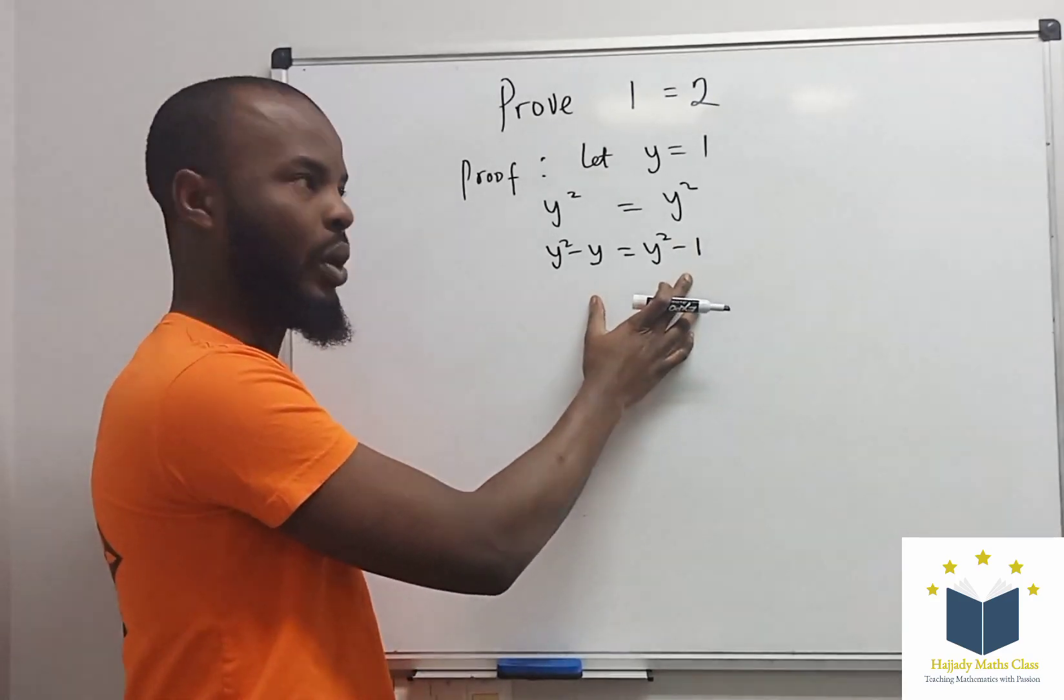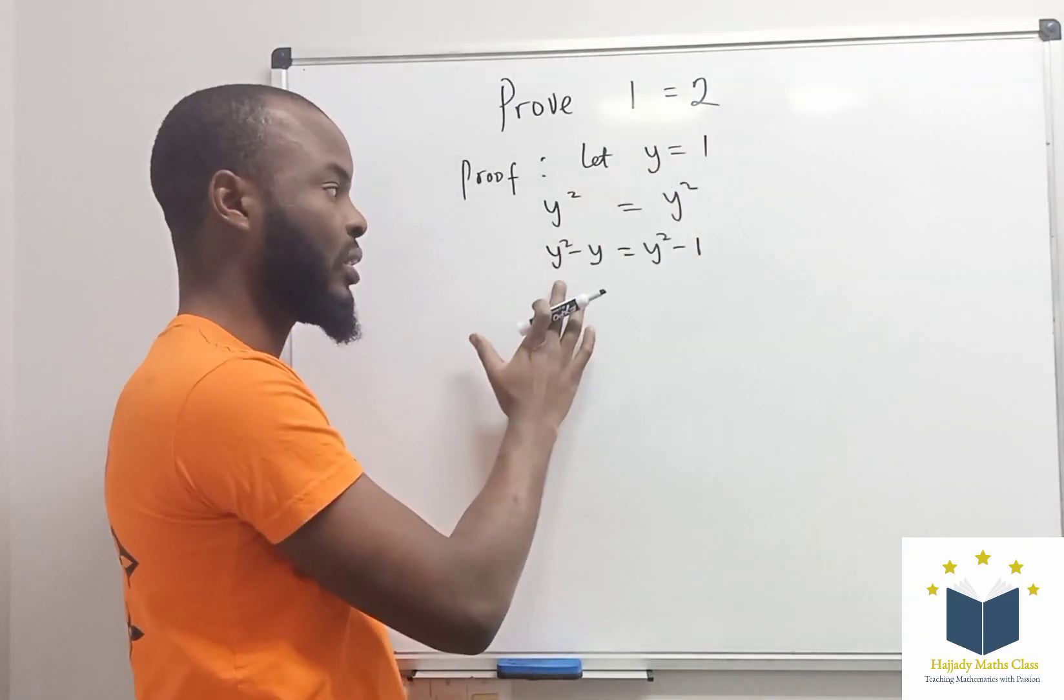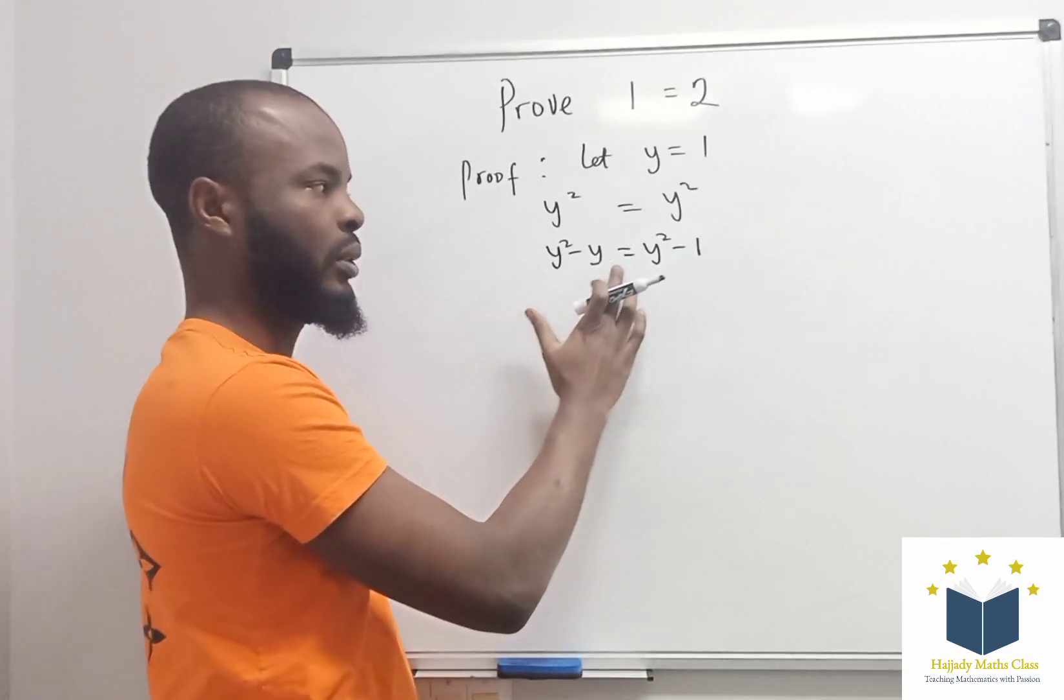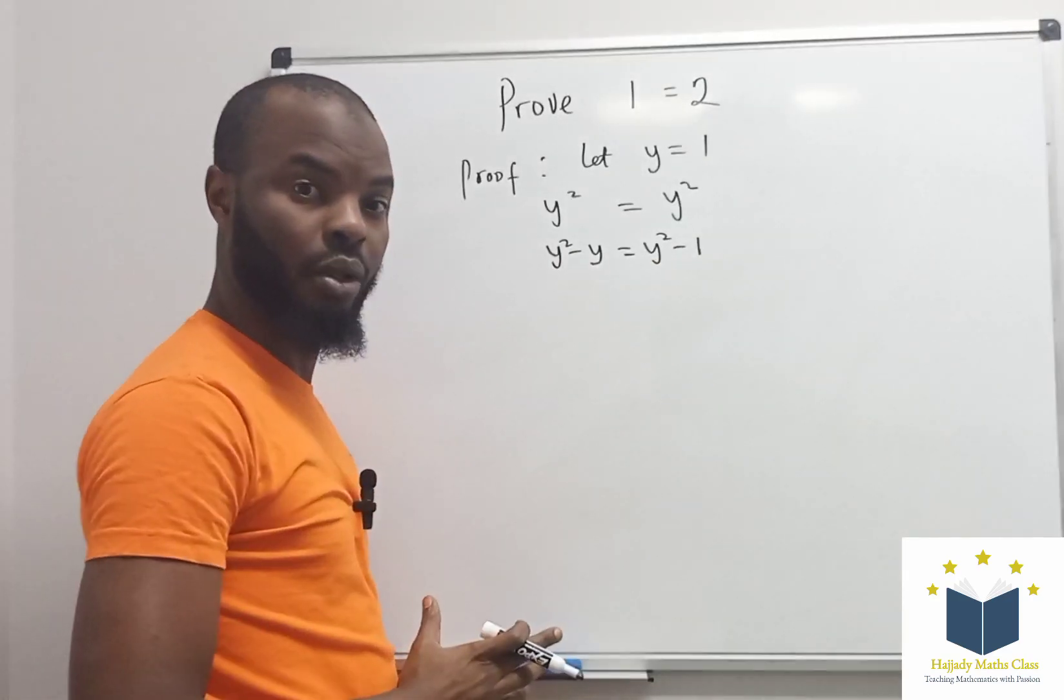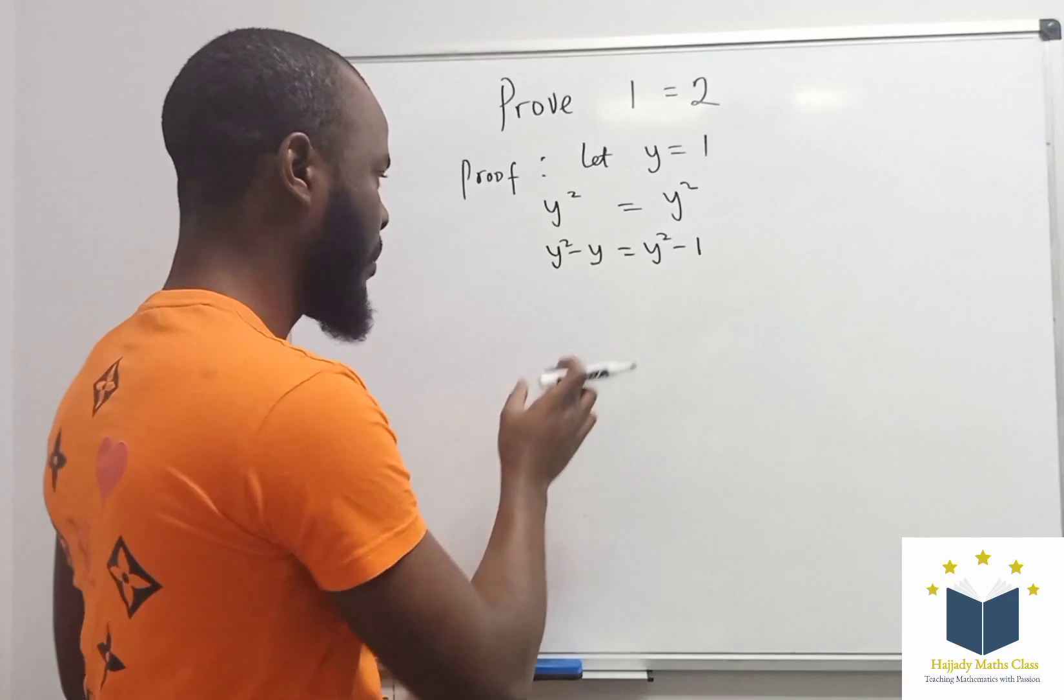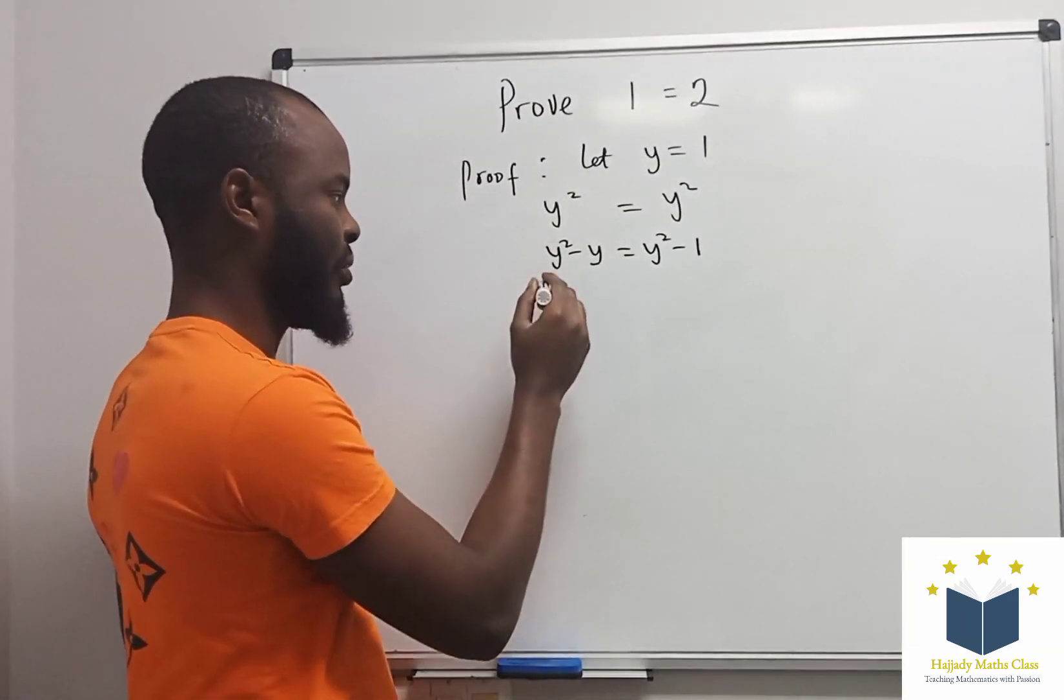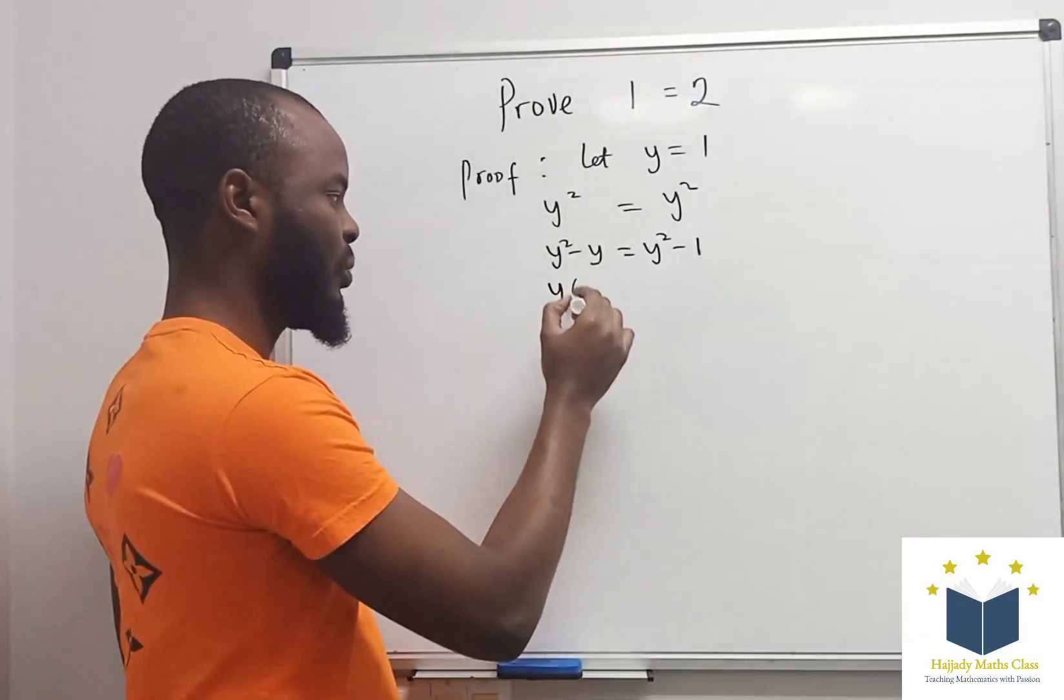Why? Because this is just like having y² - 1 = y² - 1. Now on the left-hand side, let's factorize y. By factorizing y, I'm going to be left with y(y - 1).